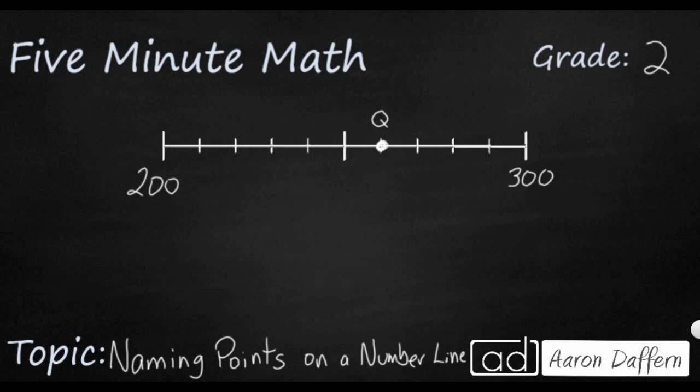Let's look at one final example. I have a new number line here. My boundary numbers are 200 and 300, and I need to find point Q. So what do I think that is? Well this should look a little bit strange. In the first two examples we counted by ones because the distance between the two sides was always 10 apart.